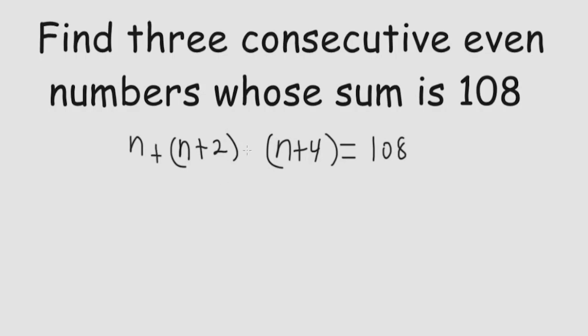So the sum of these numbers is equal to 108. So we have 1n, 2n, 3n, and we have 2 plus 4, so that's 6, and that equals 108.